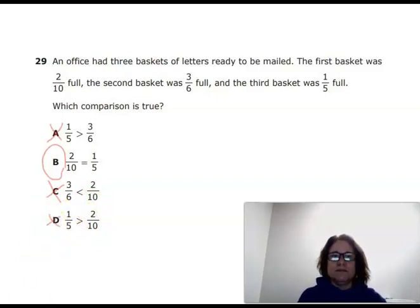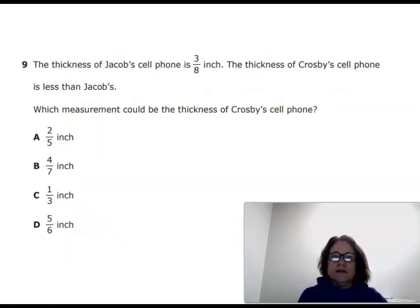All right, let's try one more. The thickness of Jacob's cell phone is three-eighths inch. The thickness of Crosby's cell phone is less than Jacob's. Which measurement could be the thickness of Crosby's cell phone? So which of these is less than three-eighths inch?